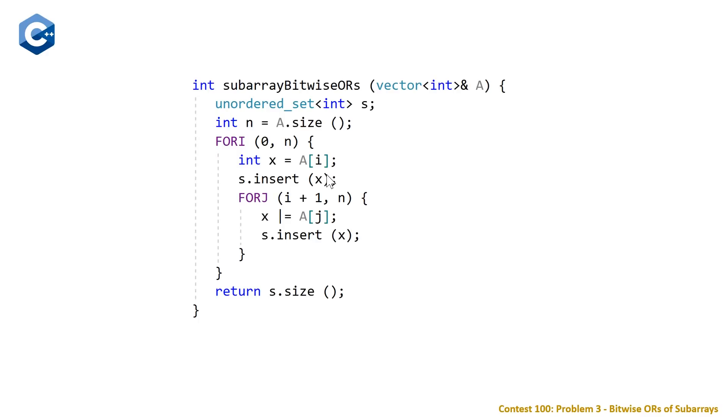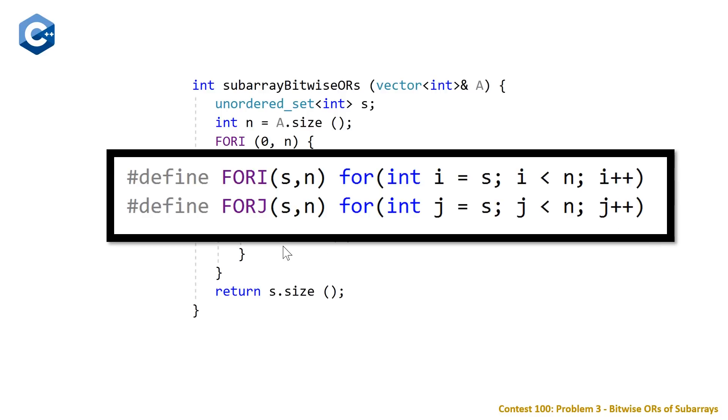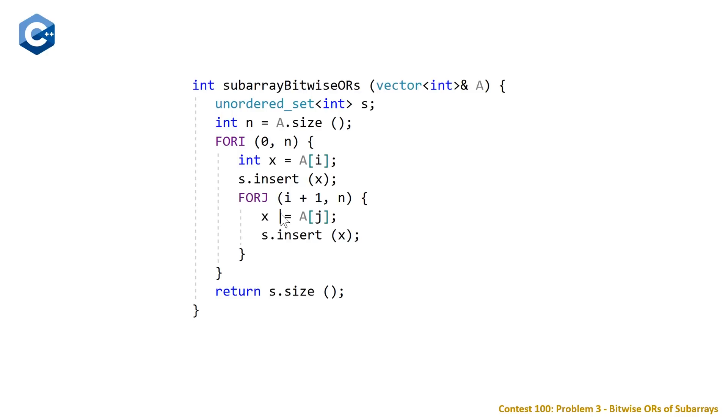We're going to start our second loop at one plus this value, so that we're not bitwise ORing itself, which is a little less efficient. We're making sure to insert this value here, because a value itself does count as a subarray. Once we enter our for loop, we are going to do a bitwise OR. This pipe or bar, note I glazed over the FORi and FORj as seen before in previous videos, these are just two macros representing our for loops. And this pipe equals is the same thing as x equals x pipe A[j].